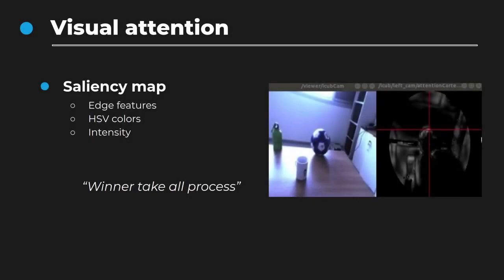The first step in our framework is the attention module, which is used by the robot to explore the scene in an autonomous way. As you can see from the image, the visual attention focuses on salient parts of the input image, such as the ball. This allows the robot to trigger an ocular movement towards the point of interest and put the focus on this region of the image, which is used to facilitate the segmentation process.